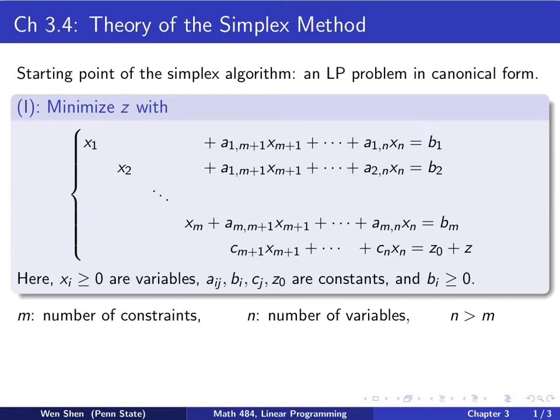We want to minimize z with the following. Here the first m equations are the m constraints, and the last one is the objective function. For a linear programming problem to be in canonical form, it needs to satisfy three conditions. Number one: the set of equations for the constraint shall be in canonical form.